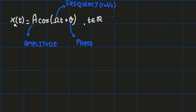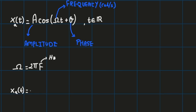Instead of omega we often use the frequency f in cycles per second or hertz, where omega equals 2πf. In terms of f, the sinusoid can be expressed as A·cos(2πft + θ). Many references express a sinusoid in terms of f instead of omega, and we'll use both formulas interchangeably throughout this course.